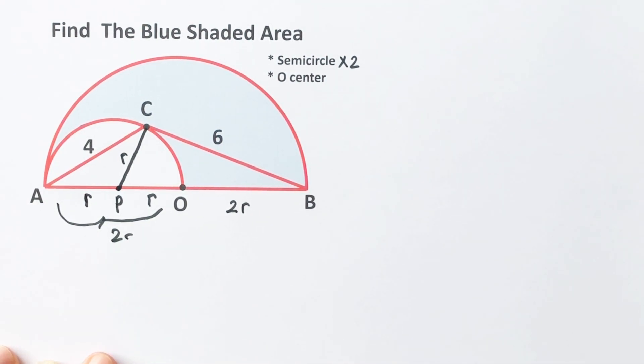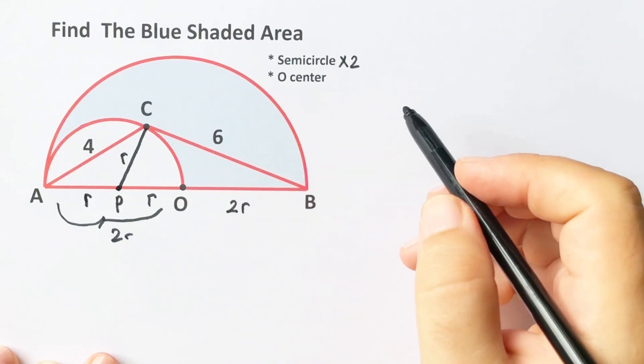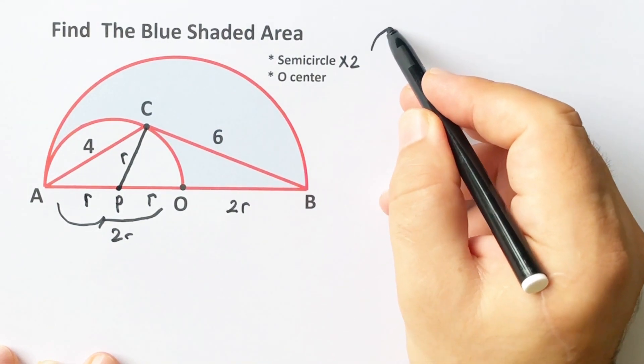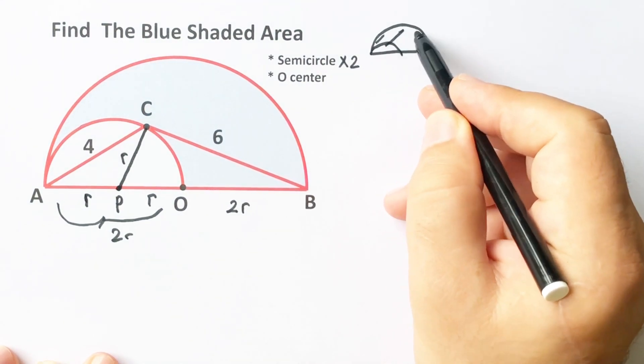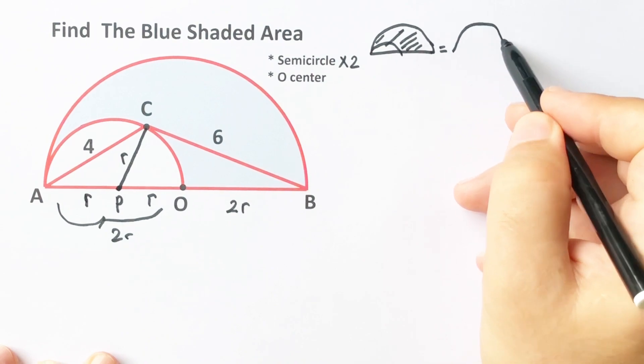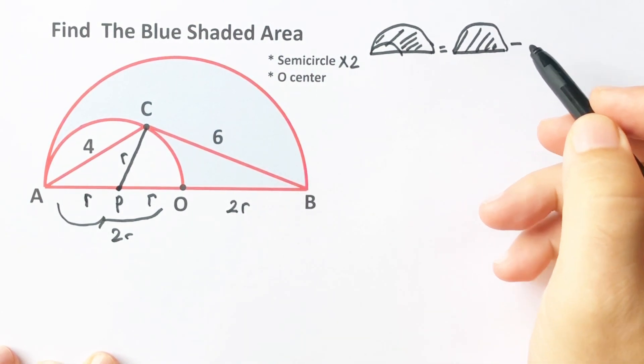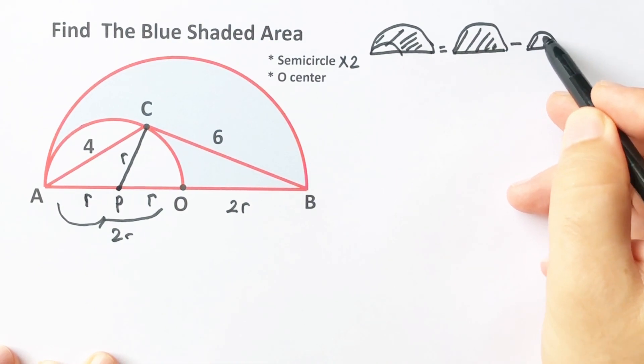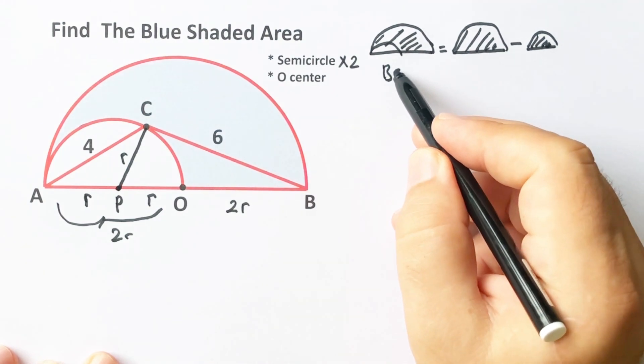If we subtract the small semicircle area from the biggest semicircle area, we get the blue shaded area. Blue shaded area equals bigger semicircle area minus smaller semicircle area.